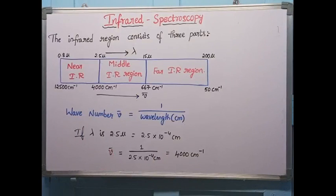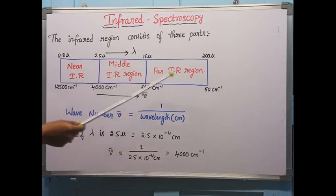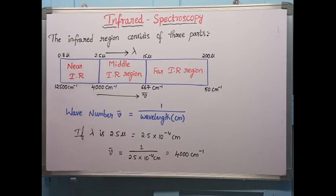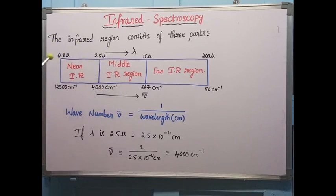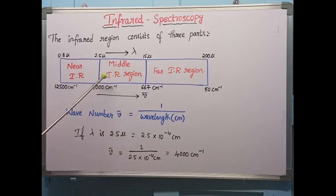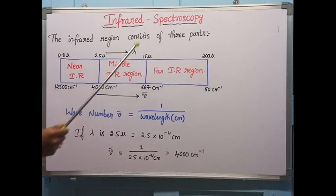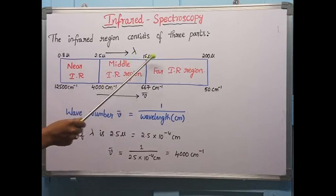The infrared region can be divided into three main parts. The near infrared region spans 0.8 to 2.5 microns. Infrared radiations can be expressed in wavelength (microns, centimeters, or nanometers) or in wave number. The middle infrared region, also called the fingerprint region, is from 2.5 to 15 microns. The far infrared region is from 15 to 200 microns.